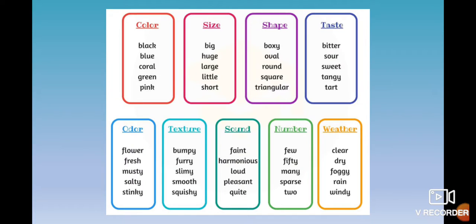We have different types of adjectives. Color: black, blue, coral, green, pink, etc. Size — la talla o el tamaño: huge, large, little, short. Shape — la forma: boxy (cuadrado), oval, round, square, triangular. Taste — el sabor, if you talk about food or fruits: bitter, sour, sweet, tangy, tart. Odor — el olor: flowery, fresh, musty, salty, stinky. Texture — la textura: furry, slimy, smooth, squishy, fluffy.